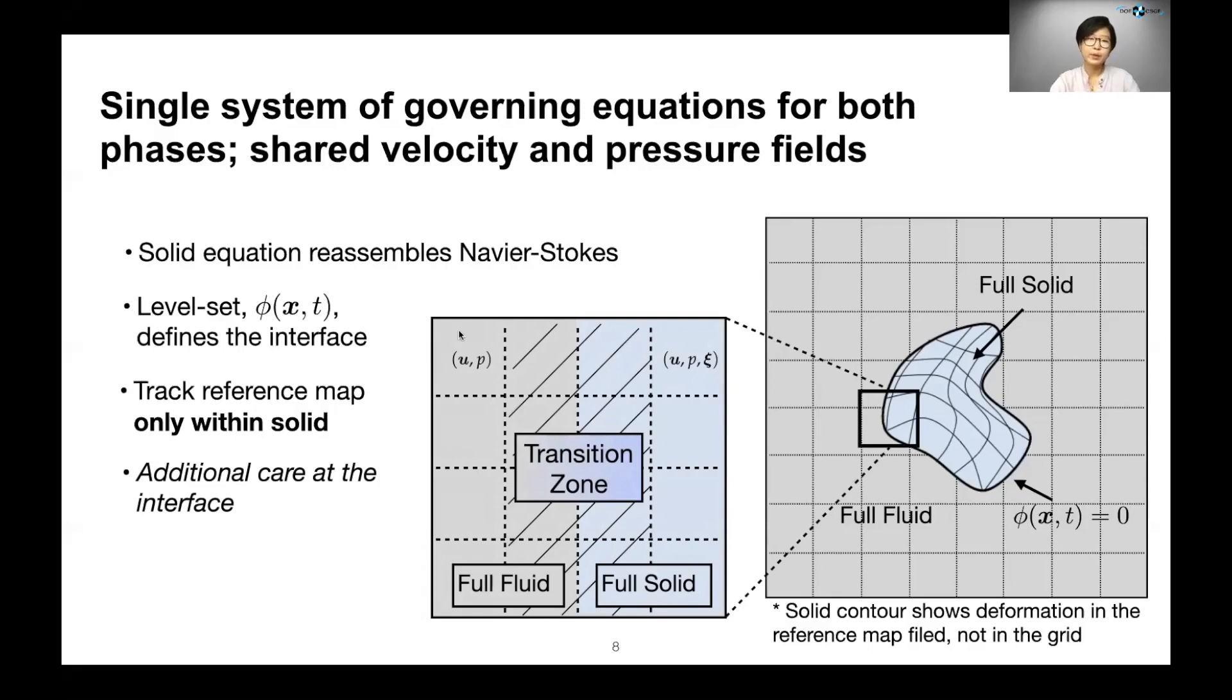For example, we can blend density and body force and stress responses smoothly from one to the next. The transition zone can also be used to define collision stresses when the bodies come into contact.